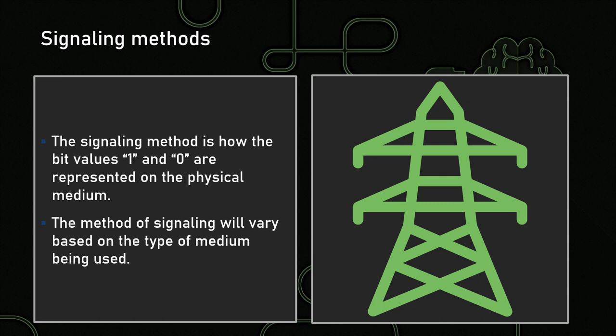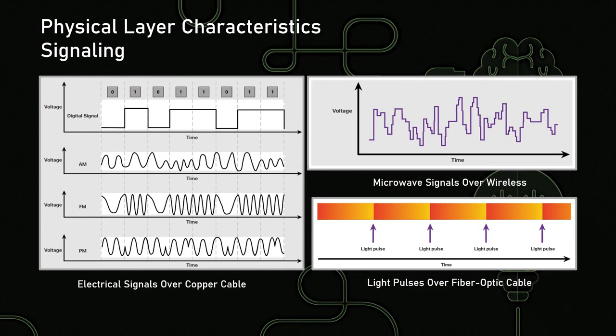That signaling method shows how we represent ones and zeros. When we get to the midpoint of the frame based on whatever timing or signaling we're using, that will identify a peak or a trough — top or bottom, one or zero. The type of signaling is going to vary based on the type of medium that you use. Looking at electrical signals over copper cable, these are going to be different based on whether we're using period modulation, frequency modulation, amplitude modulation, or digital encoding.